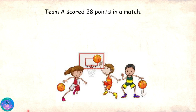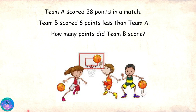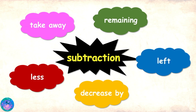Team A scored 28 points in a match. Team B scored 6 points less than Team A. How many points did Team B score? Oh, that is easy. The word 'less' tells us that we need to take away 6 from 28 points. So, 'less' is another keyword for subtraction.